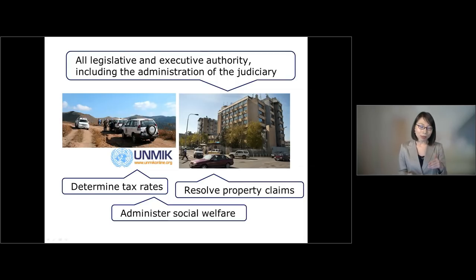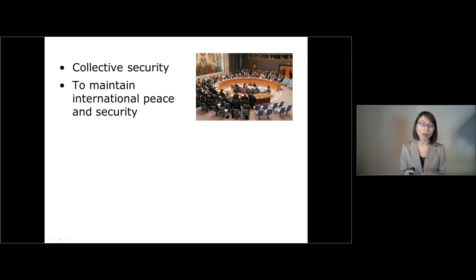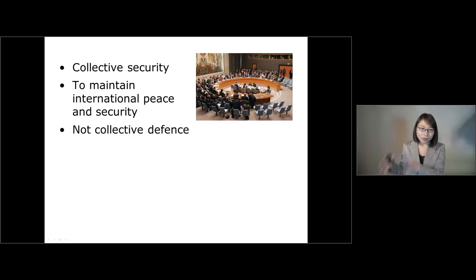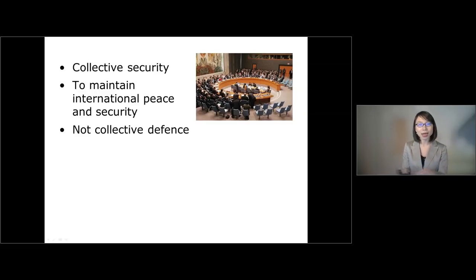KFO and ANMIC were part of the measures taken by the Security Council within the regime of collective security. The idea of collective security is to limit or even prohibit unilateral solutions and to try to maintain international peace and security together through collective effort. This is very different from collective defense. In collective defense you assume a potential enemy outside its own security regime, whereas in collective security you accommodate even a potential enemy within its own security regime.